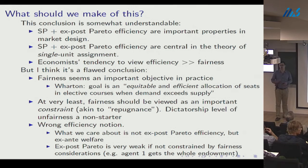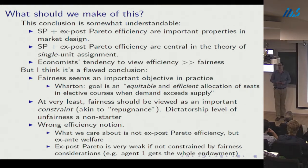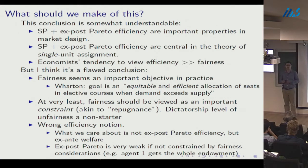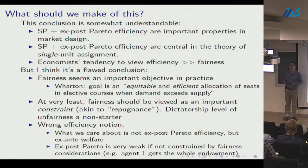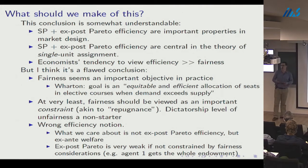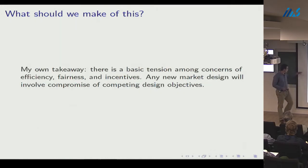Most importantly, ex post Pareto efficiency is the wrong efficiency notion for this problem. It's a very weak notion when agents have bundle demand and there are no additional constraints like fairness. For instance, with non-satiable preferences, the allocation in which one agent gets the entire endowment and everyone else gets nothing is ex post Pareto efficient, even though it's welfare-poor.